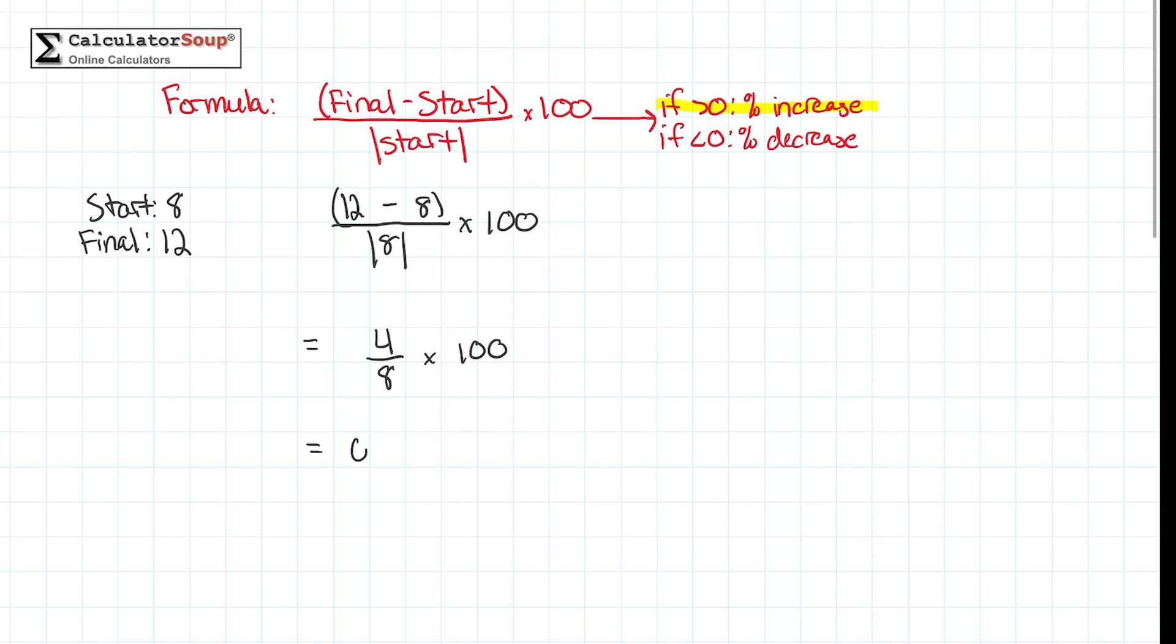Next, let's do 4 divided by 8 to get 0.5 times 100. Lastly, 0.5 times 100 equals 50. This answer is positive, so our percentage increase is 50%.